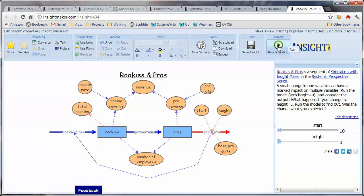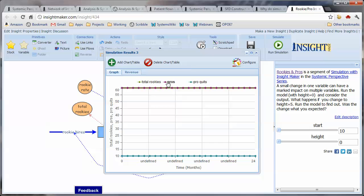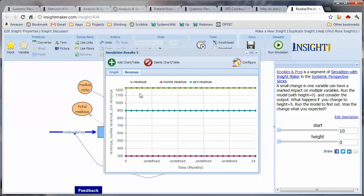So there are 10 rookies hired. This model is actually in a steady state situation whereby the total number of rookies is 60 and the total number of pros is 60. There are 10 pros that quit every month. The revenue for the organization is 900k a month for the pros, 300k a month for the rookies, 1.2 million a month in total for the organization.